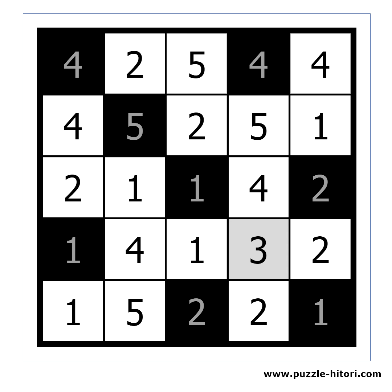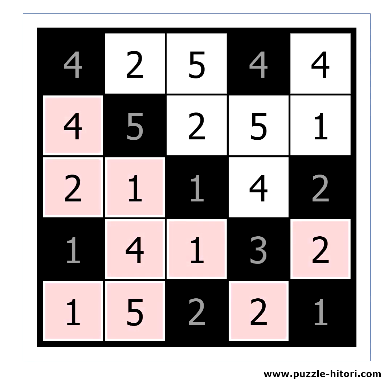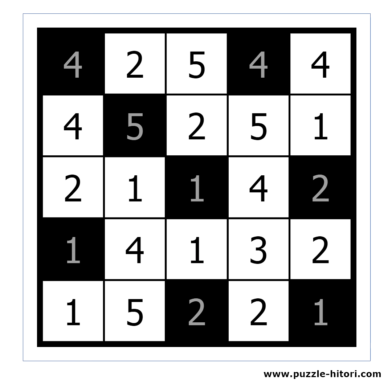We have only one cell left. If we make it black, some white cells will be isolated from the rest. So the last cell must be white. The puzzle is solved.